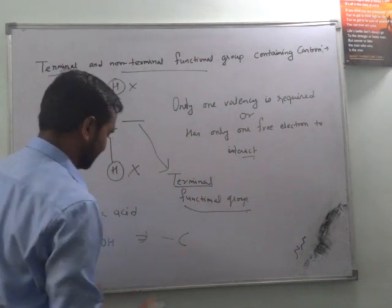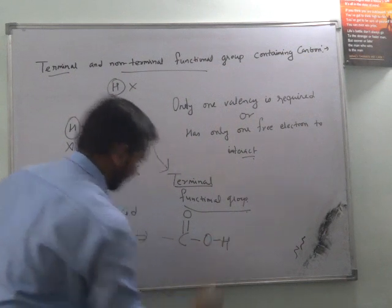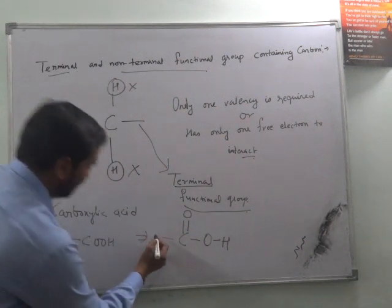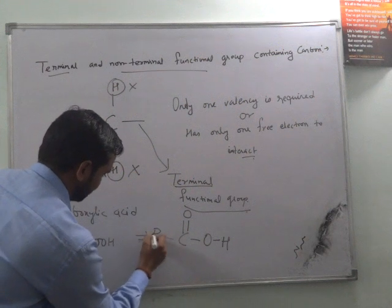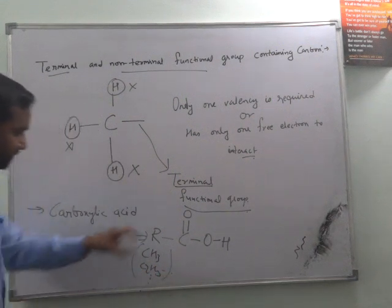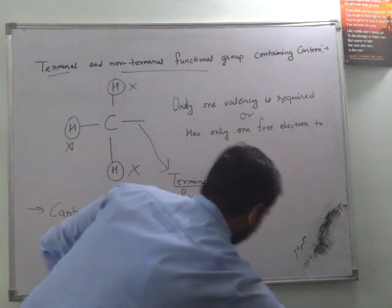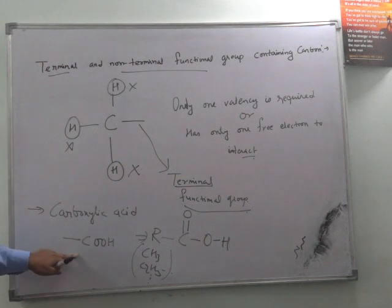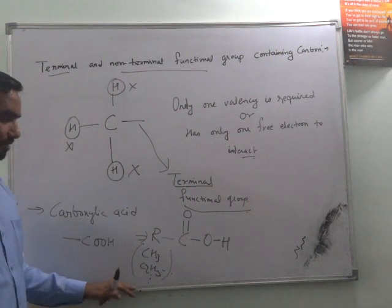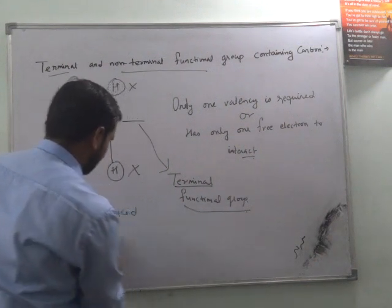This is the free valency. And what about others? Double bond O and single bond O with single bond H. This is the complete termination. Only one way to interact with any other family like X or R, any organic compound CH3, C2H5, anything. It just connects with single sharing. That's why they are called terminal.